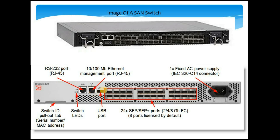Next to that we have a USB port, and after that we can see there are 24 FC ports. These ports have certain bandwidth limitations — they can be 2 Gbps, 4 Gbps, or 8 Gbps. We can increase the port speed or bandwidth by doing port channeling, which we will also discuss in coming videos.